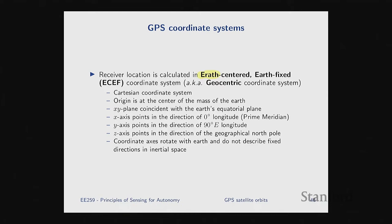There are three coordinate systems associated with GPS. The first is the Earth-centered, Earth-fixed coordinate system, or the geocentric system. It's a Cartesian coordinate system centered at the center of mass of the Earth. The x-axis points to the prime meridian (zero-degree longitude), the y-axis points to 90-degree east, and the z-axis points to the geographical north pole. This coordinate system rotates with Earth — if you're on the surface and not moving, your geocentric coordinates will not change over time. The GPS uses this system when doing localization, solving equations to find an x, y, z location for the receiver.